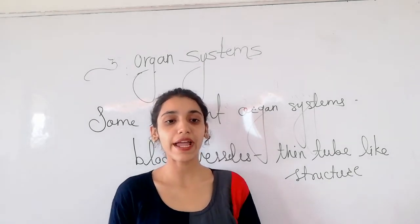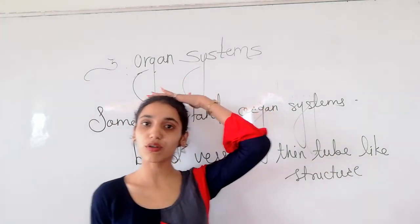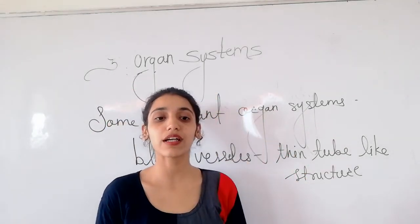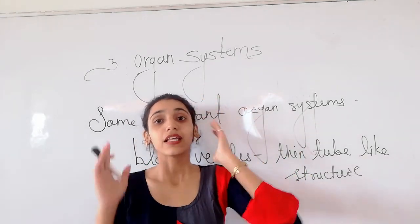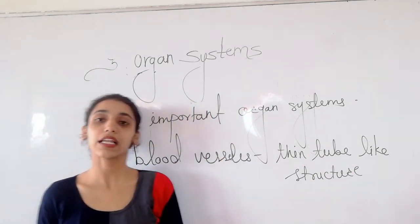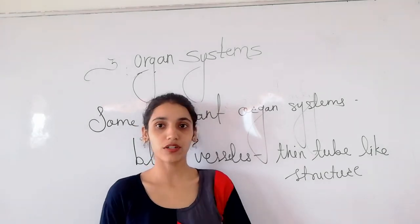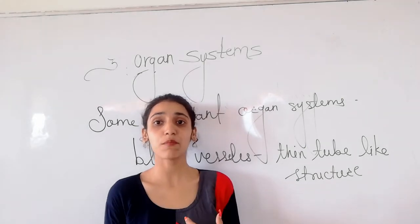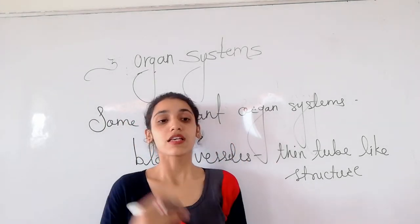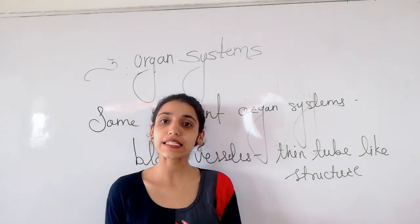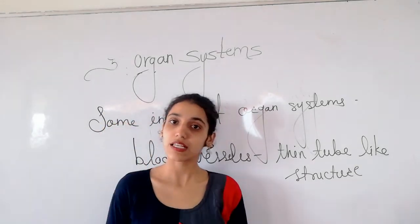Our brain controls all the activities of our body. It helps us to think and learn. Our brain is an important part of the nervous system. Heart and blood vessels are the important parts of the circulatory system, which supplies blood to the whole body. Similarly, the brain controls all our body's activities as part of the nervous system.